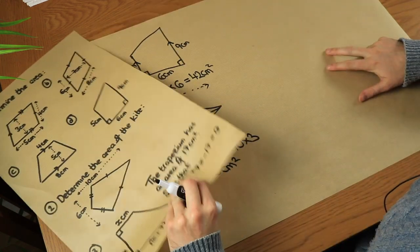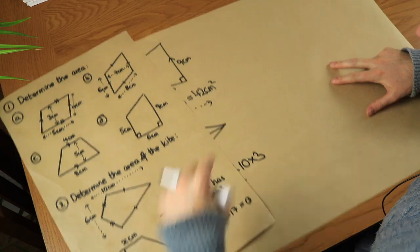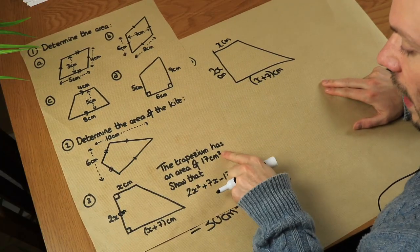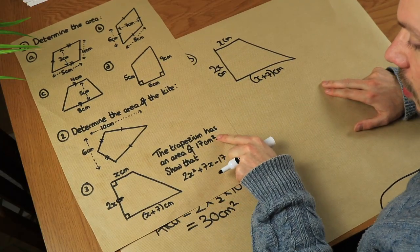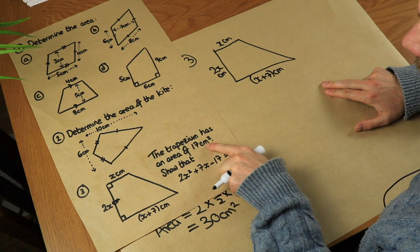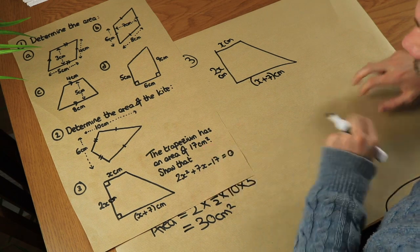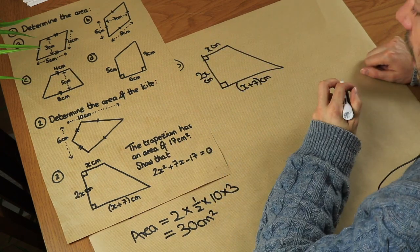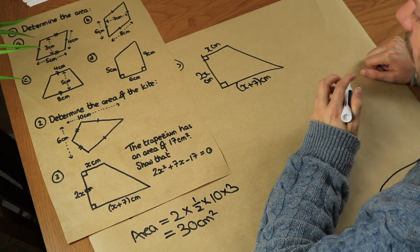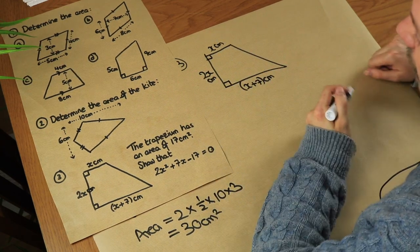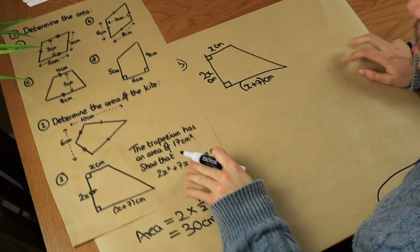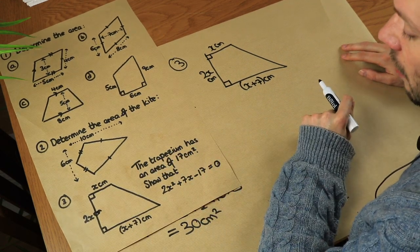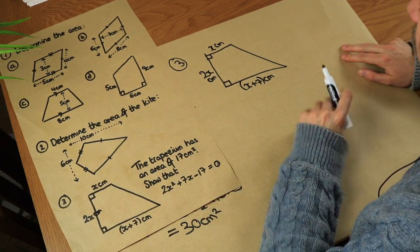Now finally we've got a harder algebraic problem. We're told that the area of this trapezium is 17. Don't be put off by the algebraic sides — just do exactly the same thing as you usually would for the area of a trapezium.